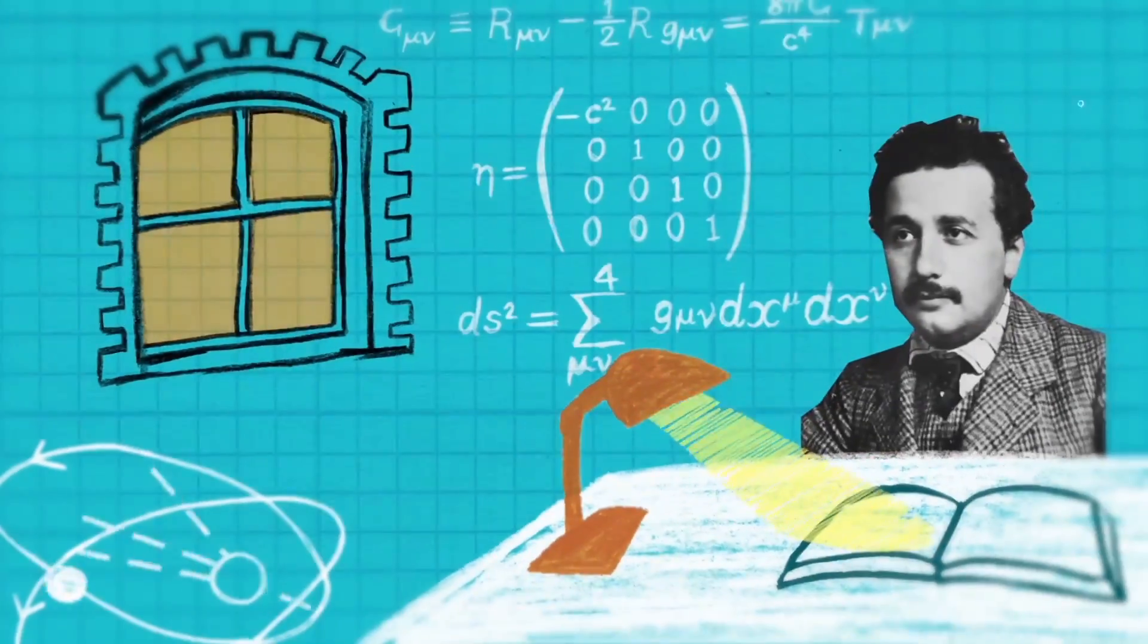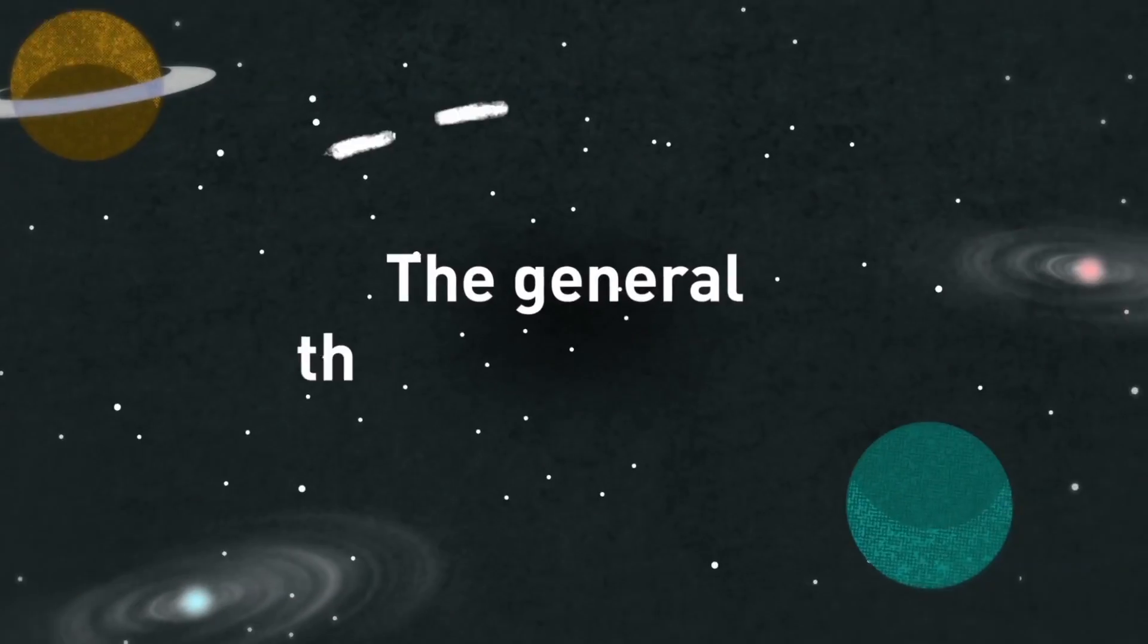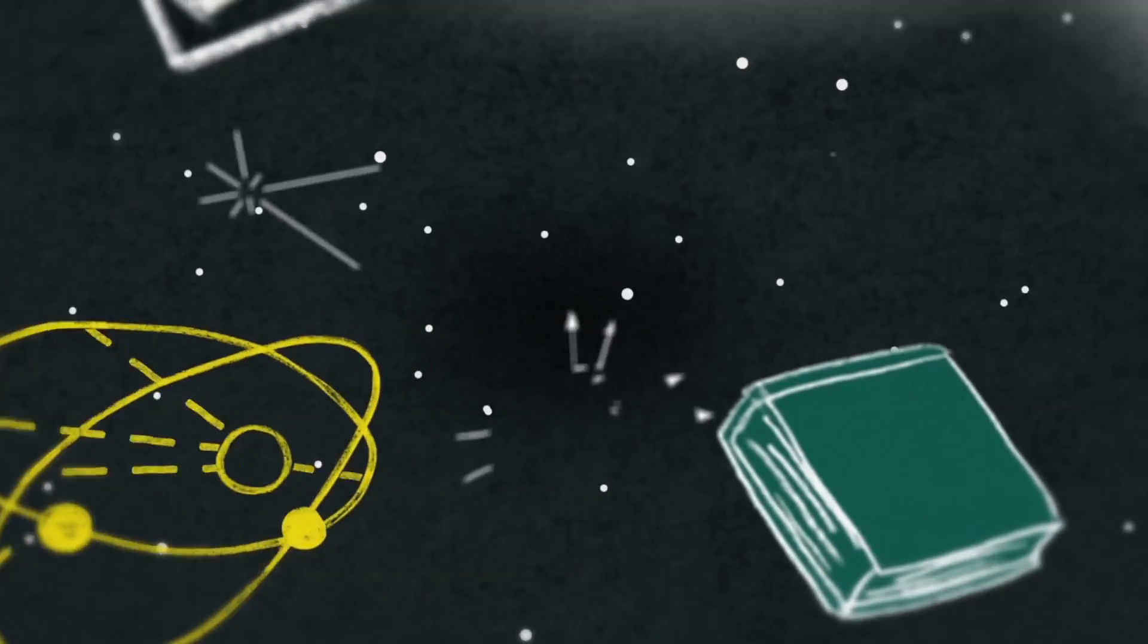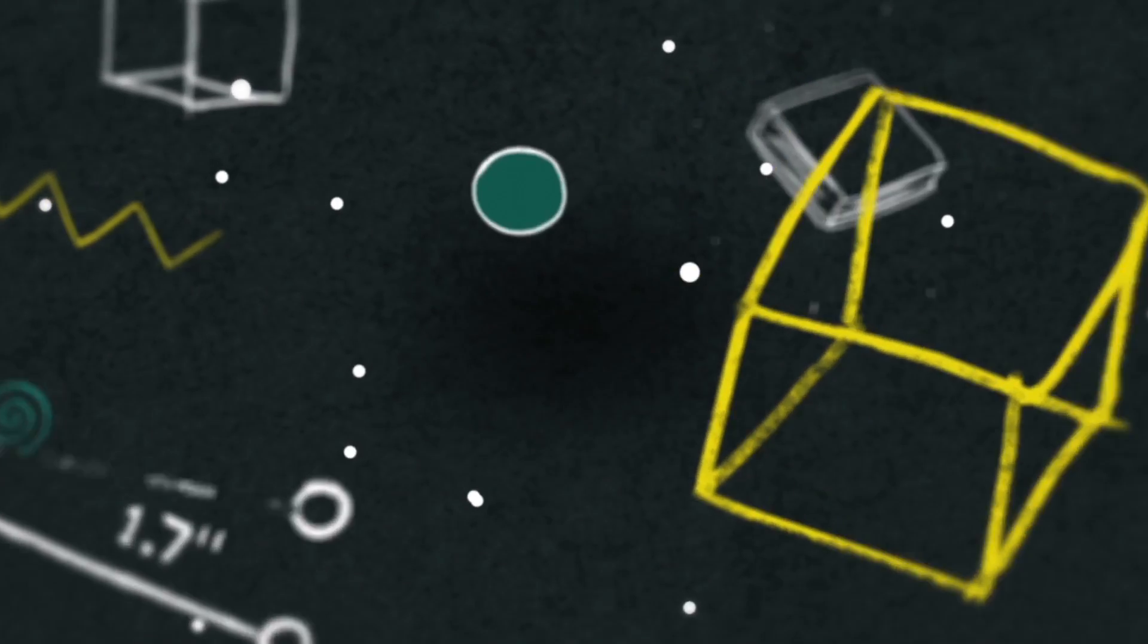A century ago, Albert Einstein revealed his greatest work, the General Theory of Relativity. After a decade of head-scratching and some very hard maths, this new theory promised to rewrite the laws of physics.